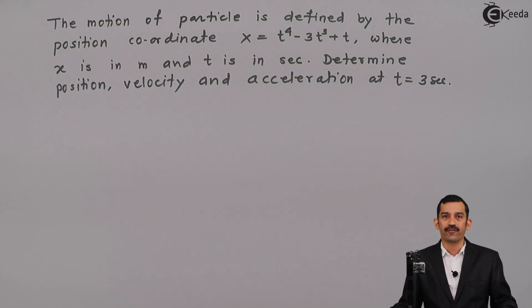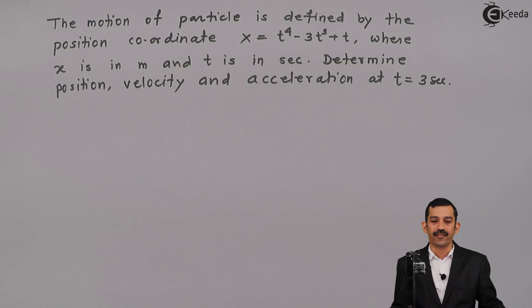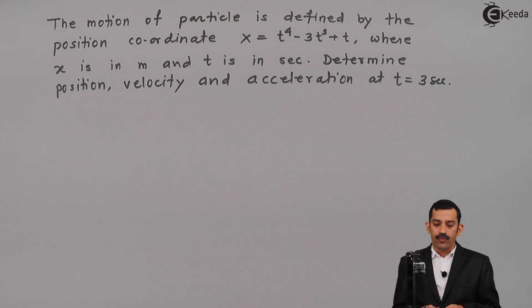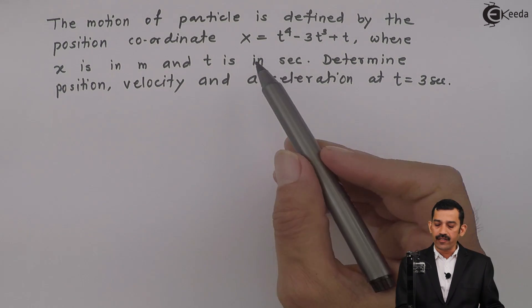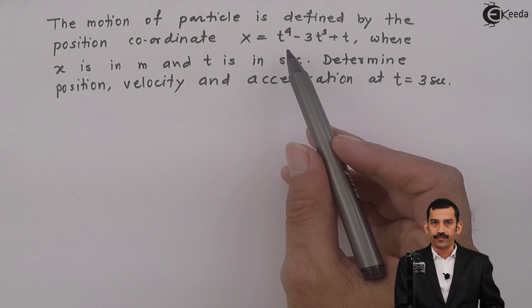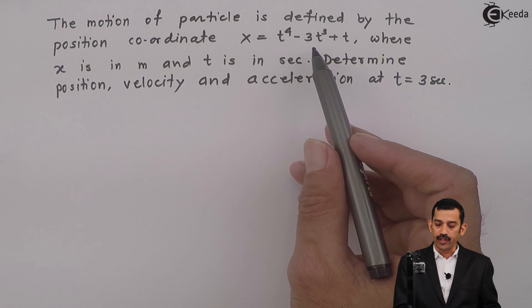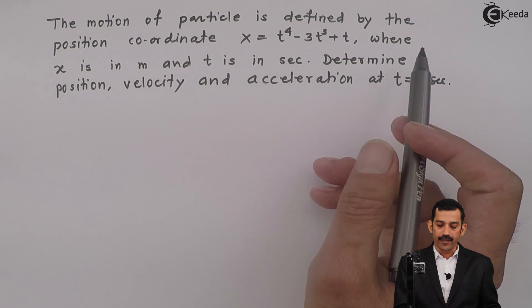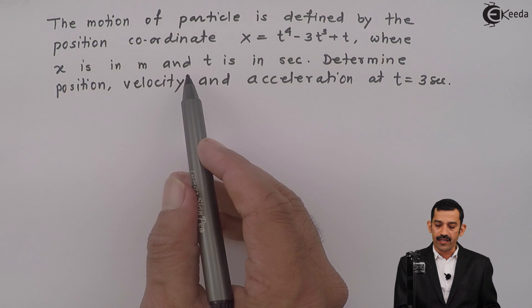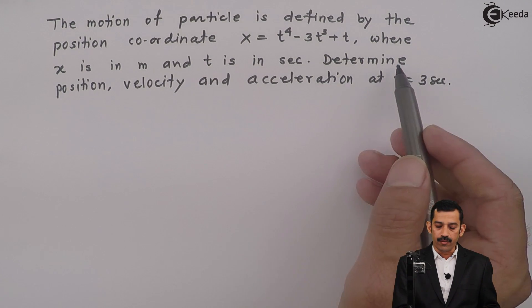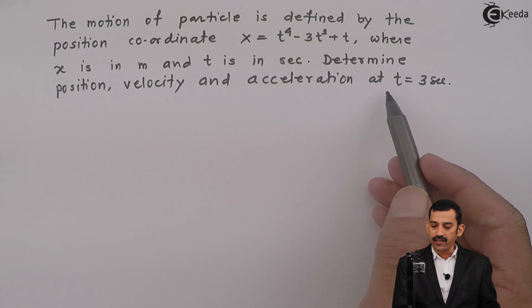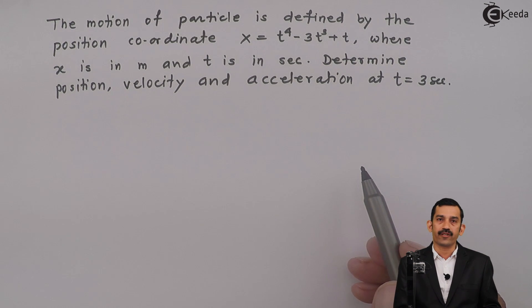Hi friends, it is all problems on variable acceleration. Just see what is given in the problem. The motion of a particle is defined by position coordinate x equal to t raised to 4 minus 3t cubed plus t, where x is in meters and time t is in seconds. Determine position, velocity, and acceleration at t equal to 3 seconds.